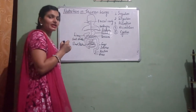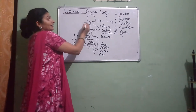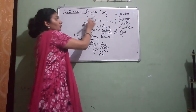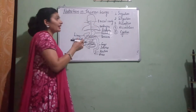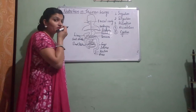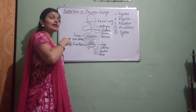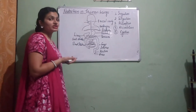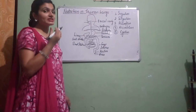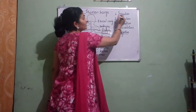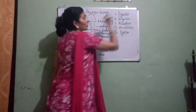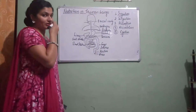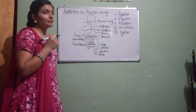In ingestion — how does ingestion take place? It takes place with the help of the mouth. Through the mouth, with the help of our hand, the complex food is taken inside. We are having holozoic mode of nutrition. That is why complex food is taken in, and that process is called ingestion.